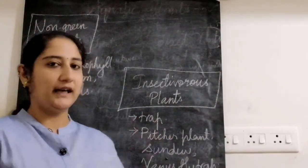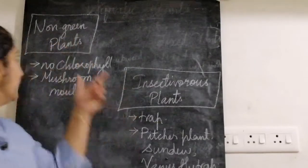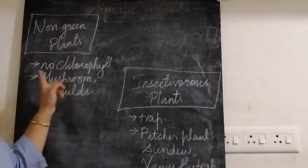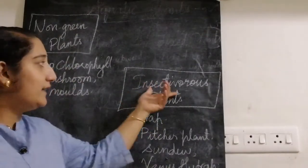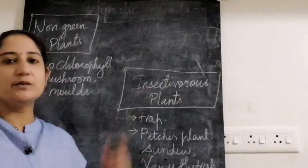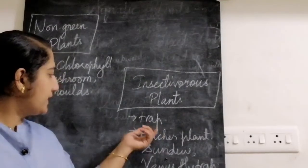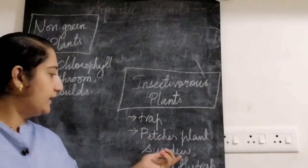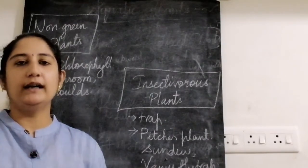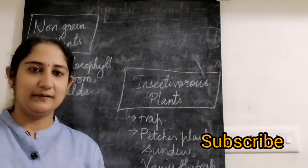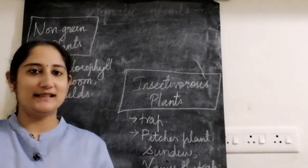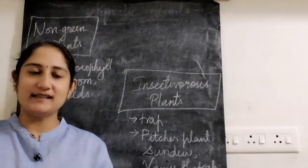These are the two different types of plants we saw. The first is non-green plants — they have no chlorophyll, and examples are mushroom and mold. The second is insectivorous plants — plants which can trap insects. Examples are pitcher plant, sundew, and venus flytrap. The leaves are modified in different shapes to trap insects. Thank you for watching — take care, be safe, and be happy.